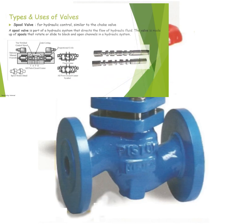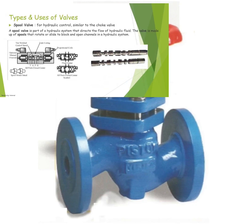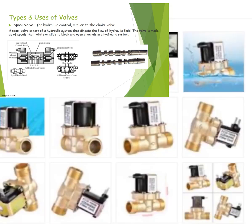A spool valve for hydraulic control, similar to the choke valve. A spool valve is part of the hydraulic system that directs the flow of hydraulic fluid. The valve is made up of spools that rotate or slide to block or open channels in the hydraulic system.